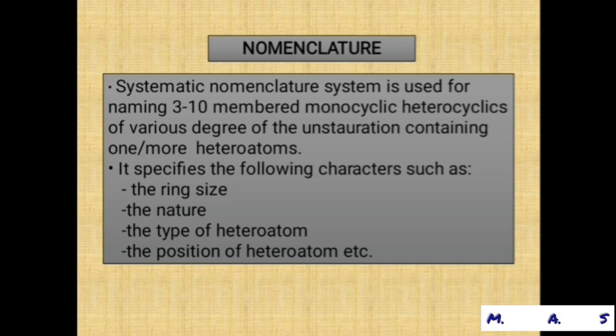Next, nomenclature. The systematic nomenclature system is used for naming 3 to 10-membered monocyclic heterocyclics of various degrees of unsaturation, containing one or more heteroatoms. It specifies the following characters: the ring size, the nature, the type of heteroatom, and the position of the heteroatom.